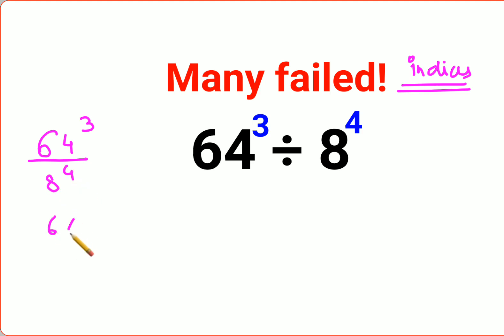Normally people would have done it this way: 64 into 64 into 64 upon 8 into 8 into 8—we have 4 eights. So here you can do it this way. This 1 times 8 times 8, this 8 and this 8 is cancelling.